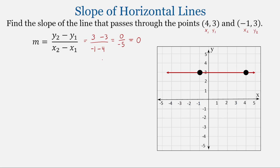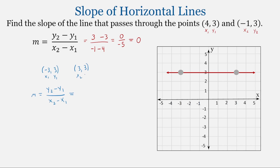Let's try some different points to confirm. We have the points (-3, 3) and (3, 3). Using the slope formula m equals y₂ minus y₁ over x₂ minus x₁, we get 3 minus 3, all over 3 minus negative 3. That gives us 0 over 6, and our result is again 0. The slope of this horizontal line is 0.